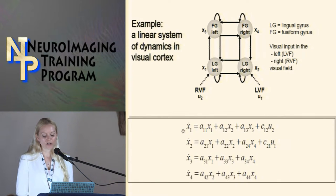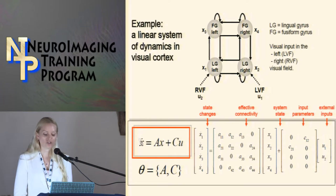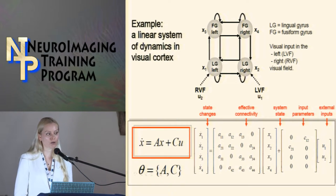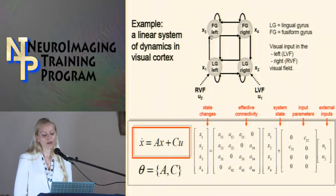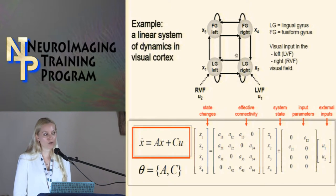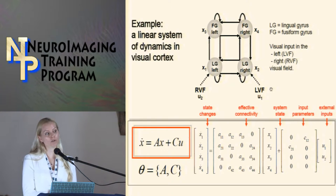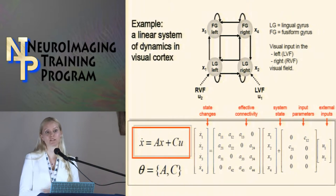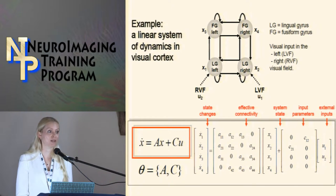You can write these equations in matrix form: the change in X with respect to time is the product of effective connectivity with the state, plus input parameters times external inputs. U is the task. The theta matrix is estimated through DCM — you estimate what the connections are, the actual A values, and the C values. C describes how strongly the task directly affects a region. Parameters set to zero are not estimated — you use your knowledge of brain connectivity to inform which parameters actually need estimation.